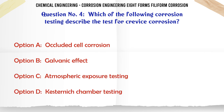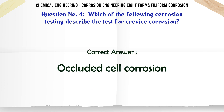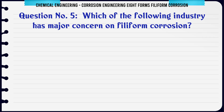Which of the following corrosion testing describes the test for crevice corrosion? a. Occlude cell corrosion. b. Galvanic effect. c. Atmospheric exposure testing. d. Kesternich chamber testing. The correct answer is a: occlude cell corrosion.